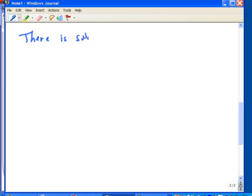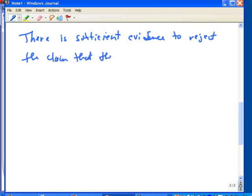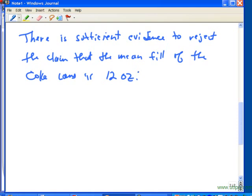So, there is sufficient evidence to reject the claim that the mean fill of the Coke cans is 12 ounces. Now, it asks, you know, so we found a statistically significant difference between what we found in our sample and what the population mean claimed to be.